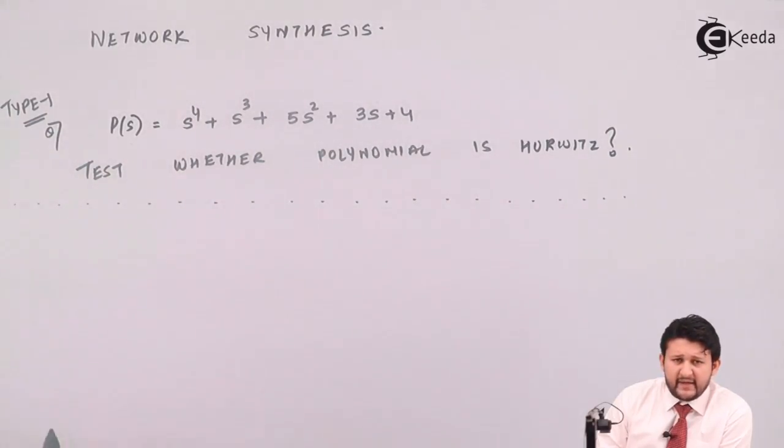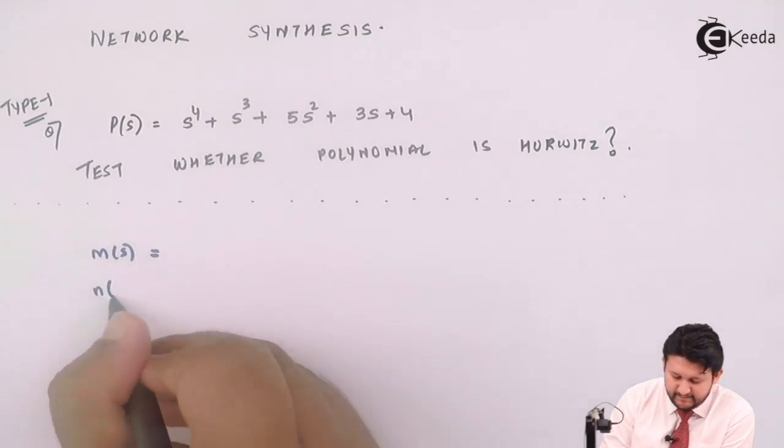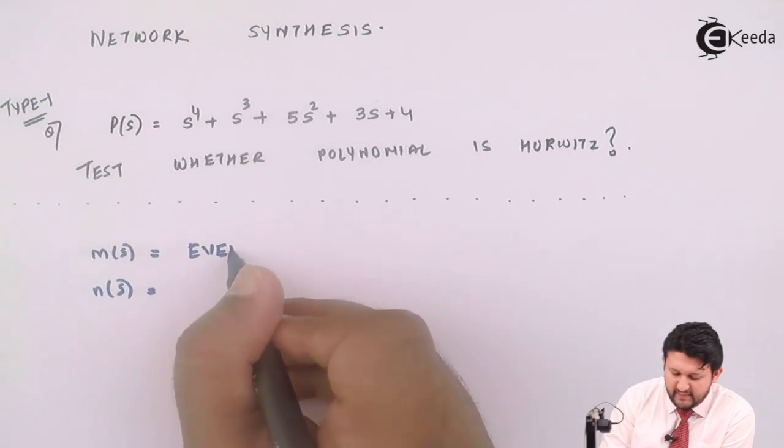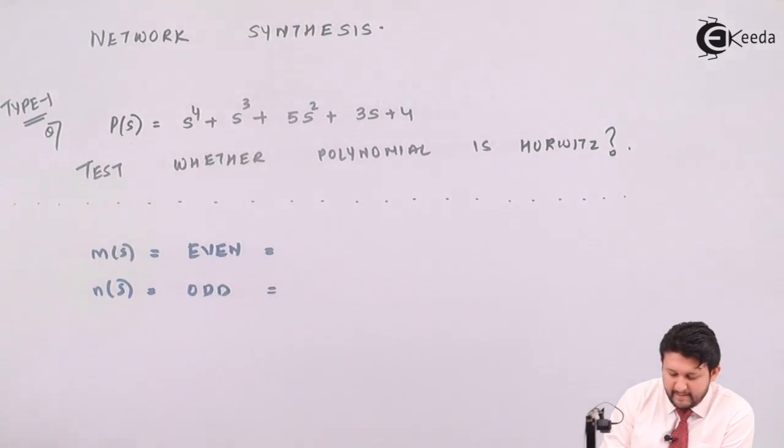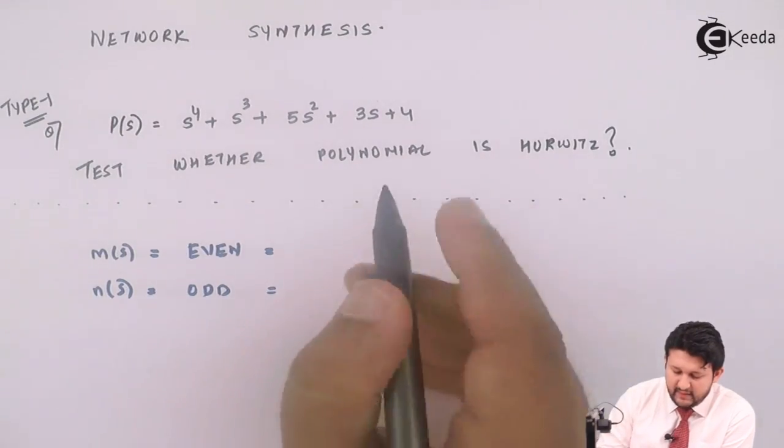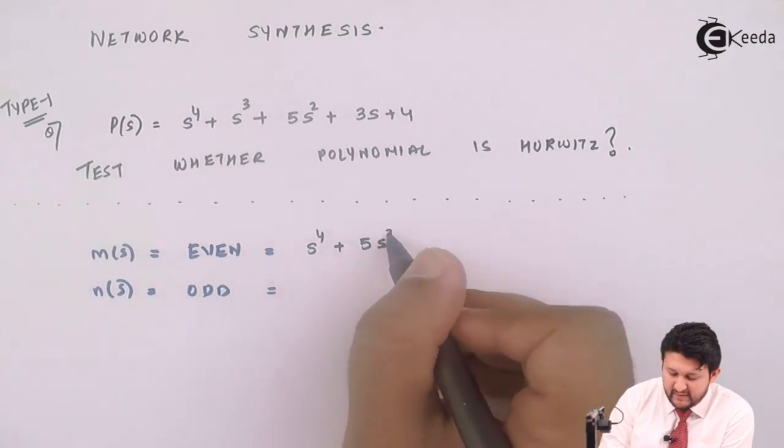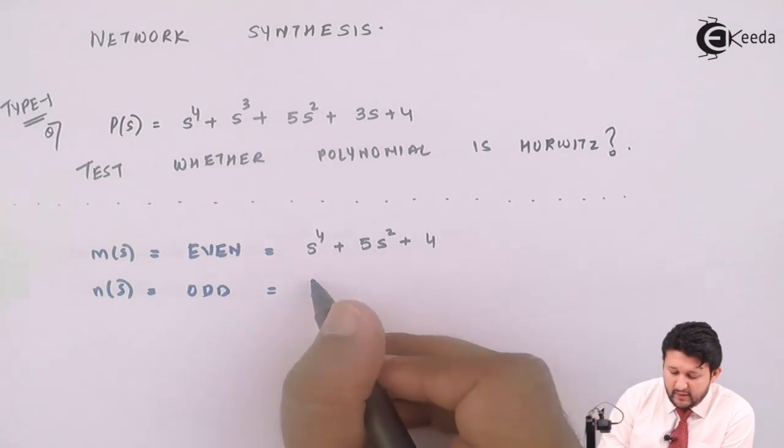Whatever equation you are getting, divide into two powers: even powers and odd powers. m(s) is the even powers, n(s) is the odd powers. So the even powers are s to the four plus five s squared... the odd is s cubed...